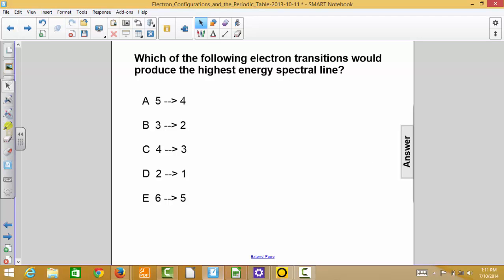The answer in this case is letter choice D. A transition of an electron from the second energy level to the first energy level, also known as the ground state,